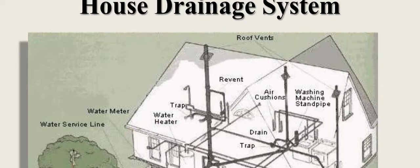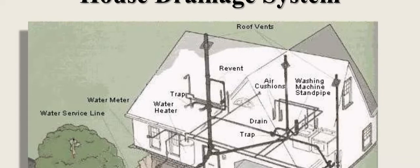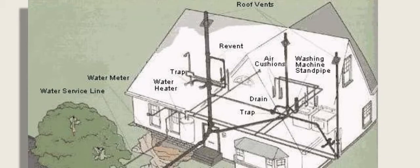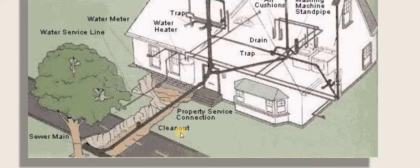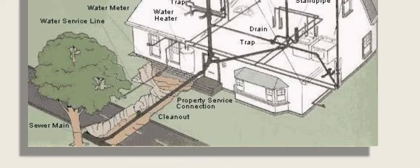This is an actual sketch of the house drainage system showing its various components. The cross-section of a house shows roof vents for the ventilating pipe, traps, drain, air cushions, washing machine standpipes, water heater, trap, water meter to manage water consumption, water service line, property service connection, clean-outs, and the main sewer line adjacent to the road.